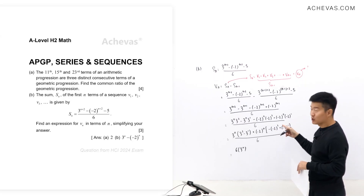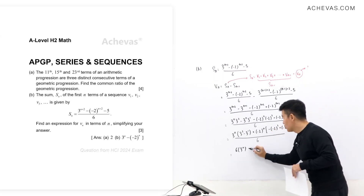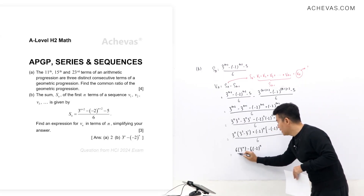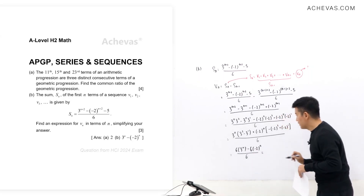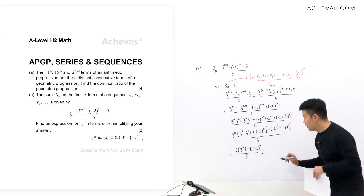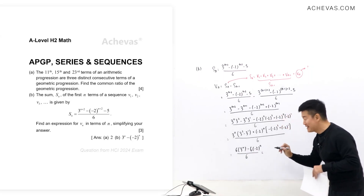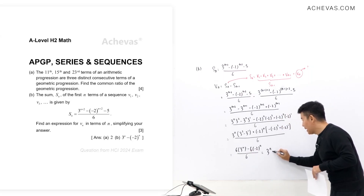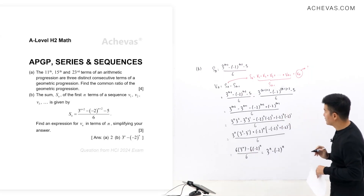We have 9 − 3 = 6 for the 3^n coefficient and −4 − (−2) = −6 for the (−2)^n coefficient. Dividing both by 6, the simplified answer for V_n is 3^n − (−2)^n.